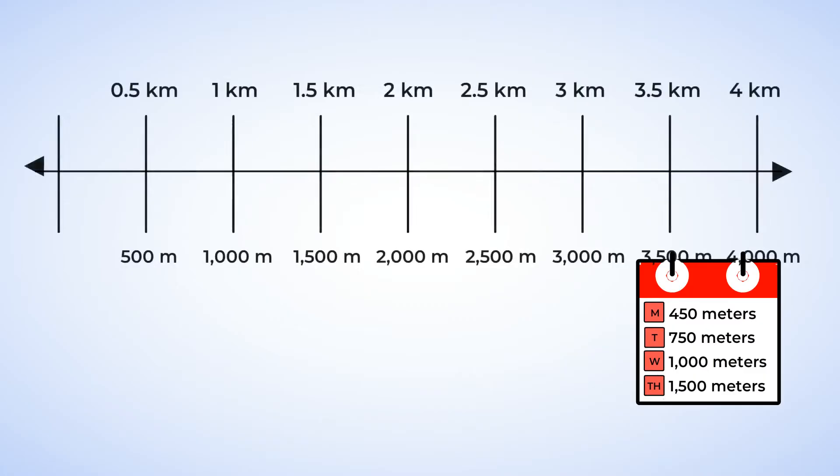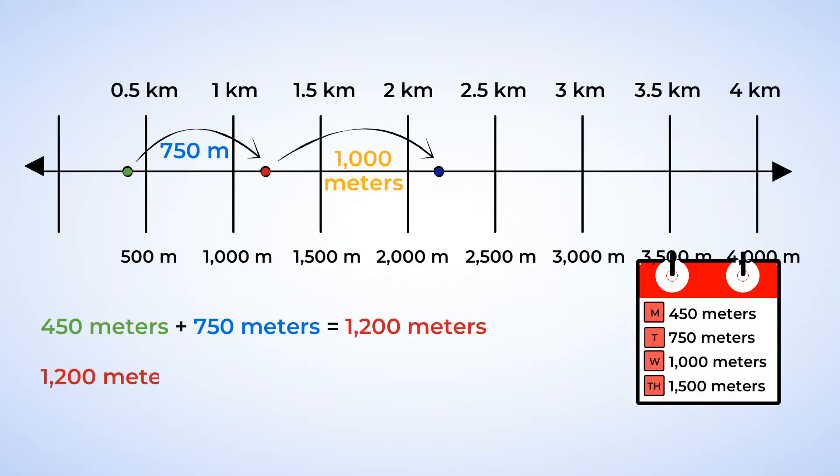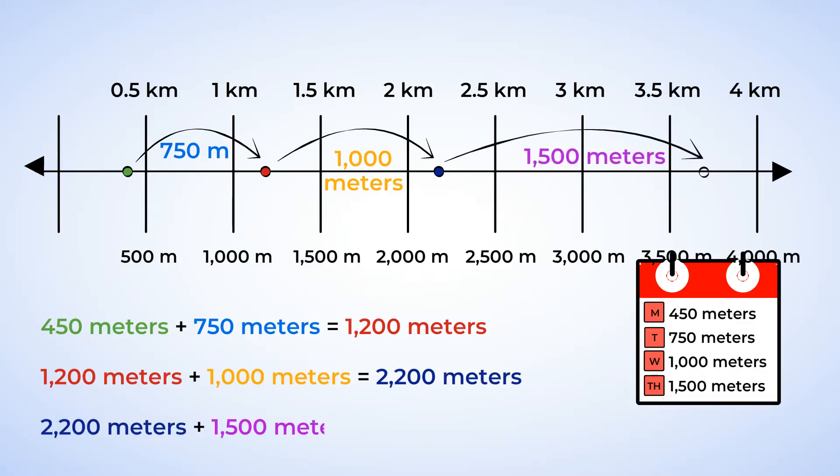Now we can add up all of our meters. 450 plus 750 is 1,200. Plus 1,000 equals 2,200. And finally, we add in 1,500 to get a total of 3,700 meters.